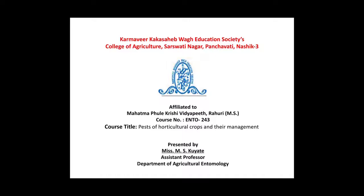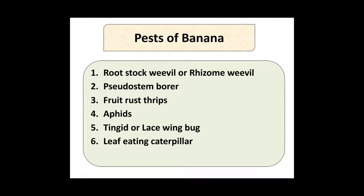These are the pests of banana. First one is Rootstock Weevil, also called Rhizome Weevil. Second one is Pseudostem Borer. Third one is Fruit Rust Thrips. Fourth one is Aphids. Fifth one is Tingid or the Lace Wing Bug, and last one is Leaf Eating Caterpillar. In this lecture, we are going to study only the major pests of banana.